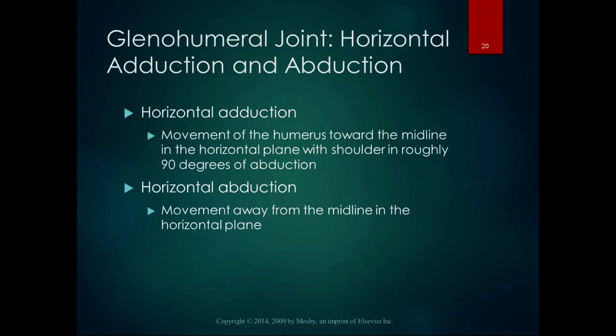With abduction and adduction we also have horizontal abduction and adduction. These are unique movements because they do not start at anatomical position — they start with the shoulder at roughly 90 degrees of abduction, making a capital T with the arms. Movement of the humerus toward the midline in that horizontal plane is horizontal adduction; movement away from the midline in the horizontal plane is horizontal abduction.